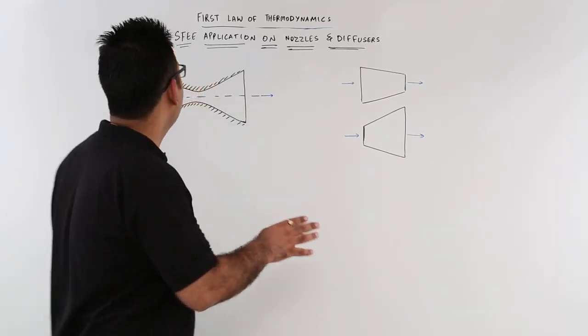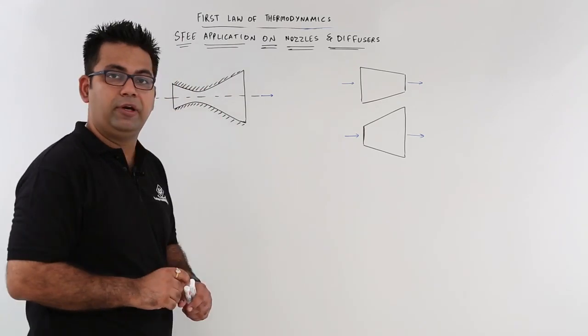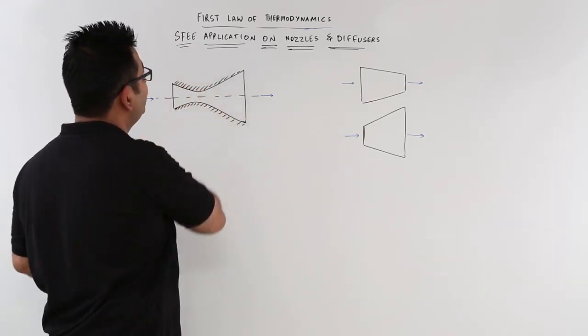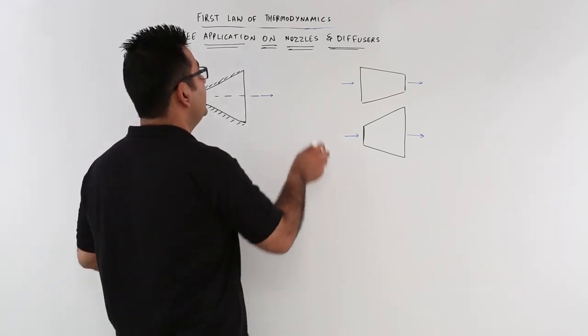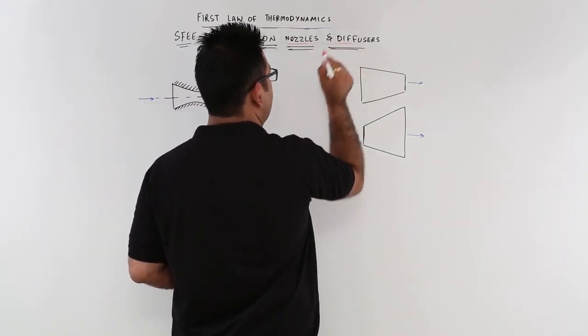Now let us look at the first application of the steady flow energy equation, or in short SFEE. The first application we talk about is on nozzles and diffusers.